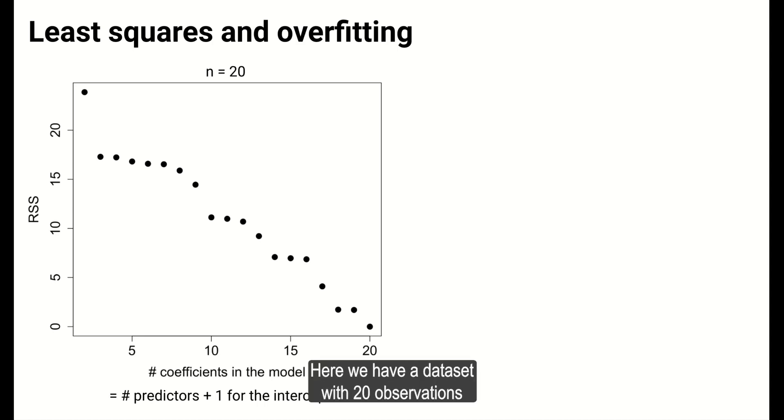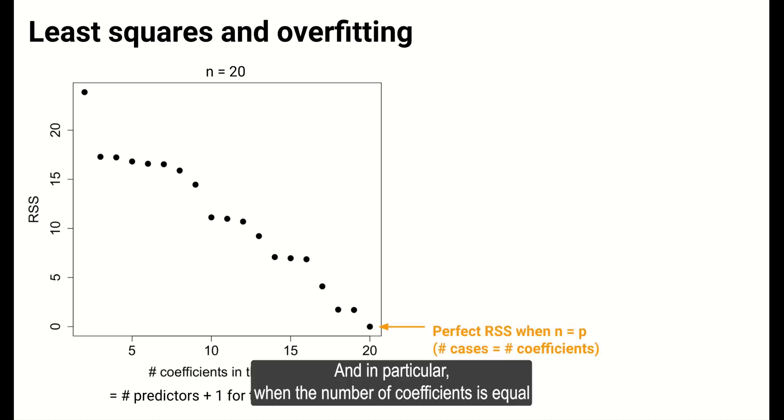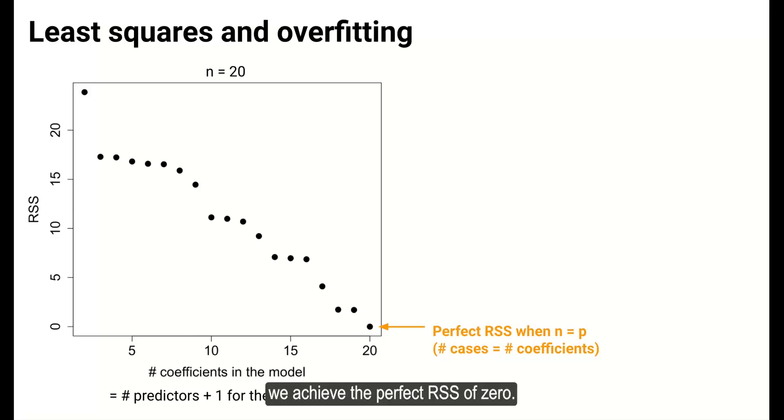In the plot here, we have a dataset with 20 observations where all predictors were simulated to just be random numbers. We increase the number of predictors included in the model one by one, and we see that as the number of predictors increases, the sum of squared residuals is always decreasing. And in particular, when the number of coefficients is equal to the number of cases, we achieve the perfect RSS of 0.